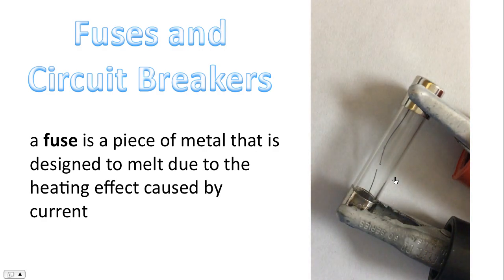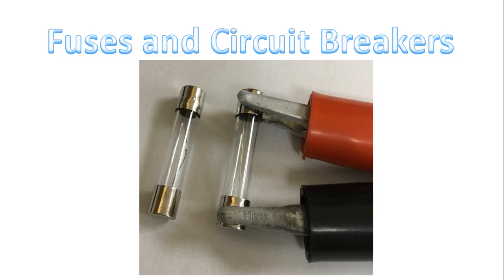Notice at this point, part of the metal of the fuse has melted and as a result the circuit is now open. So this is the official definition of a fuse: a fuse is a piece of metal that is designed to melt due to the heating effect caused by current. This diagram shows the difference between a fuse that is functional and can conduct electricity — the wire is intact — and a fuse which has melted as a result of too much current flowing through it.